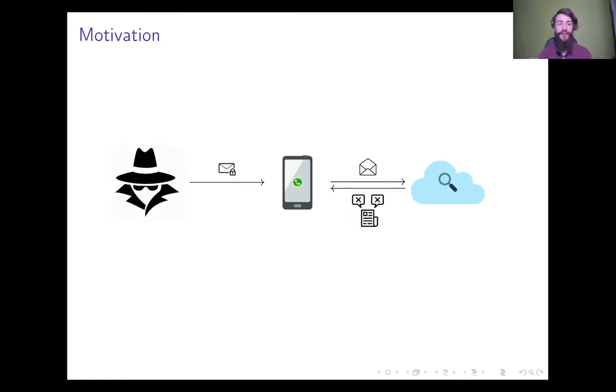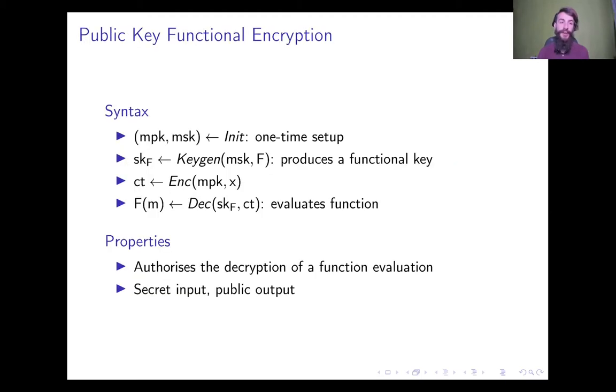As a motivating example, take the problem of detecting fake news in encrypted messages. When a user receives a suspicious message, they either have to evaluate by downloading a heavy machine learning model on their client, which is inefficient and does not allow a way for the user to provide feedback to the wider community, or they can decrypt their message and upload it to the cloud for analysis. This has the consequence of revealing the user's entire correspondence to the cloud. A potential solution is that of deploying public key functional encryption.